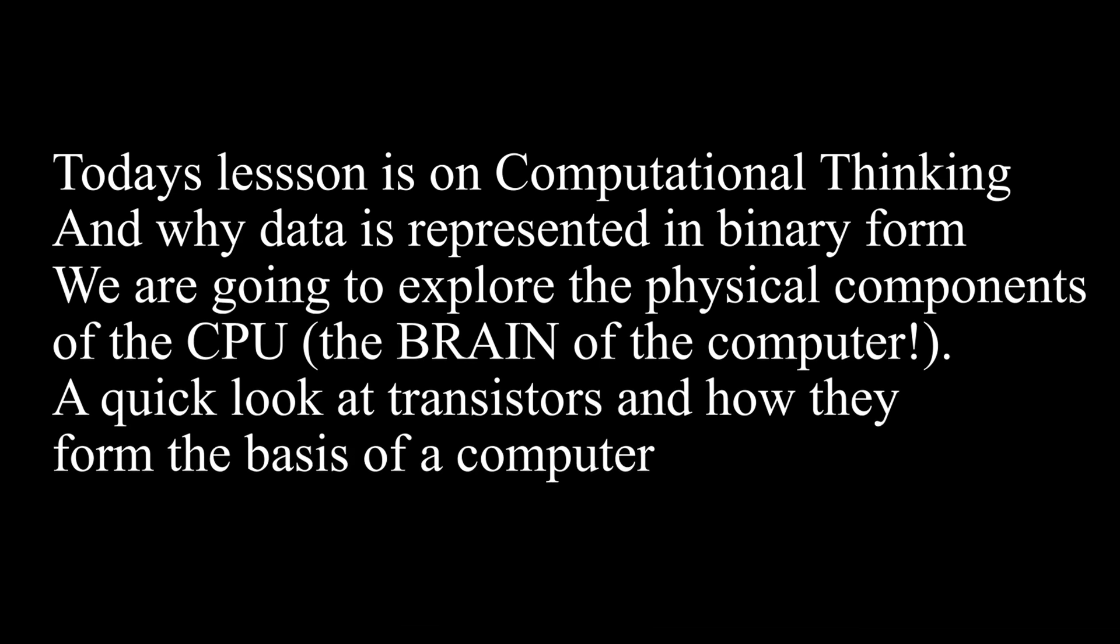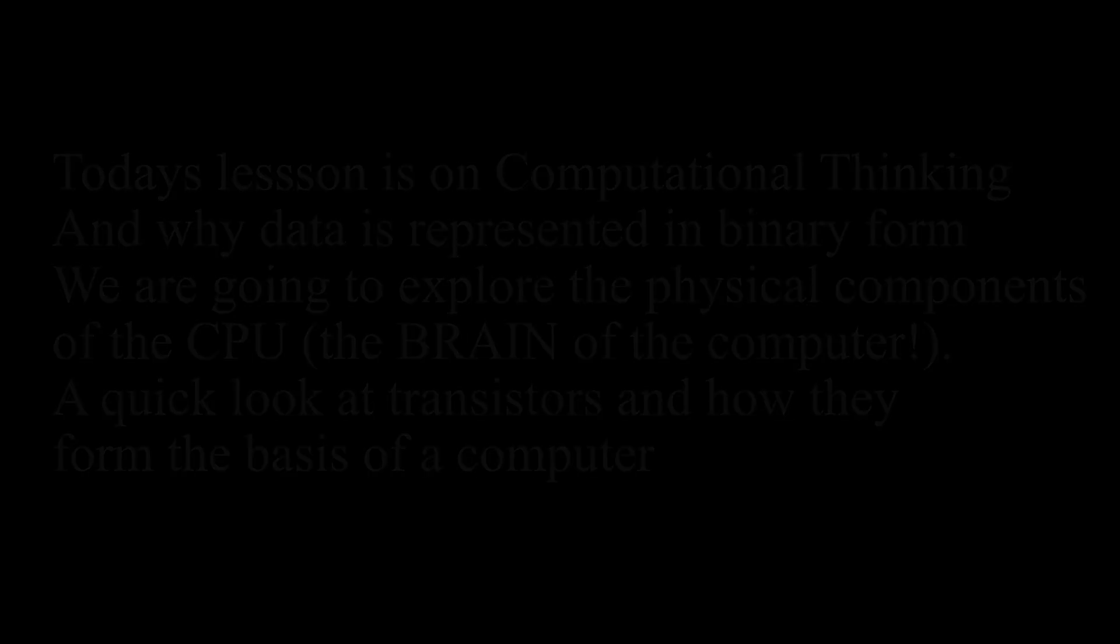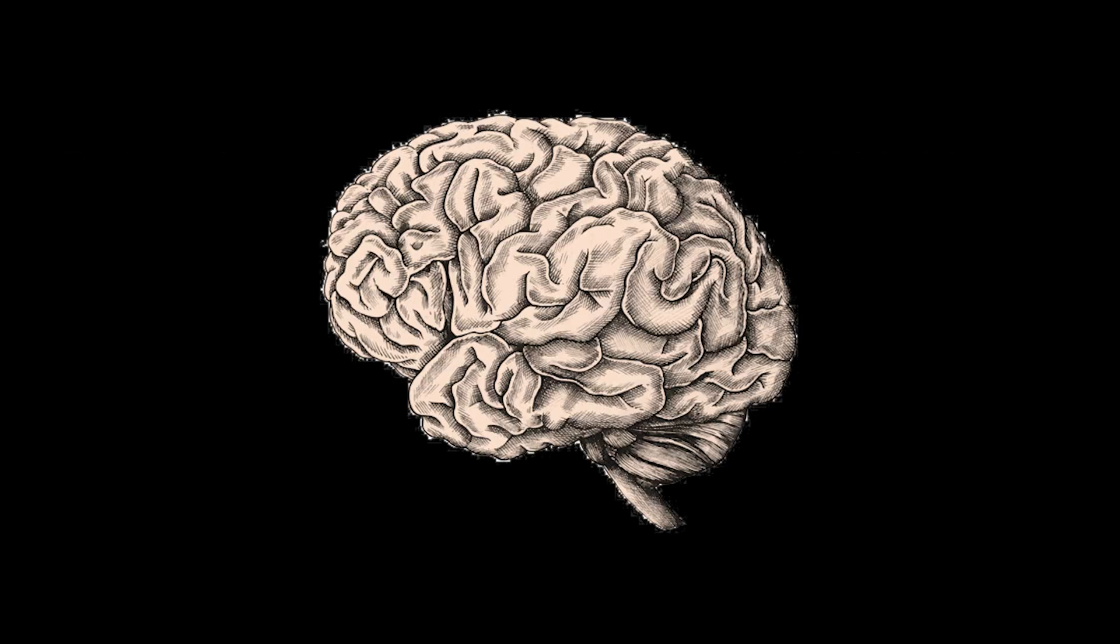First we need to figure out how a computer's brain looks and works, the brain being the CPU of course. As you know, the human brain consists of neurons and grey matter. The computer's brain looks a little different.